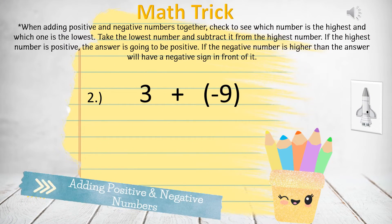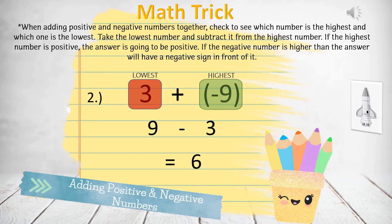Question 2: 3 plus negative 9. 9 is the highest and 3 is the lowest. We subtract the lowest from the highest, 9 minus 3. 9 minus 3 equals 6. But in this case, the highest number, 9, was a negative number. So this will make 6 a negative number. So our answer is negative 6.